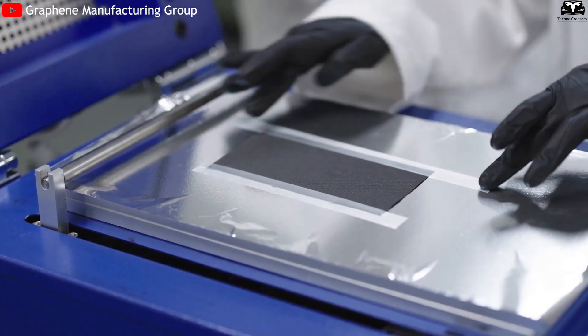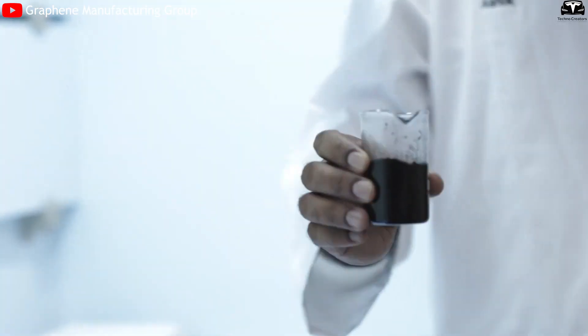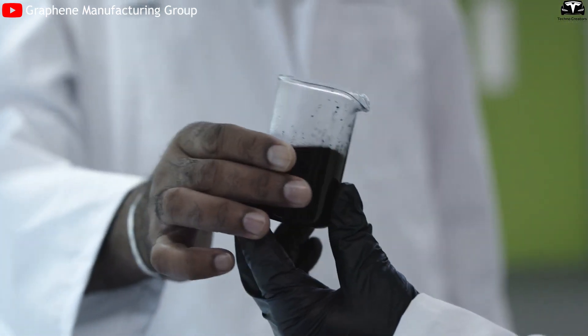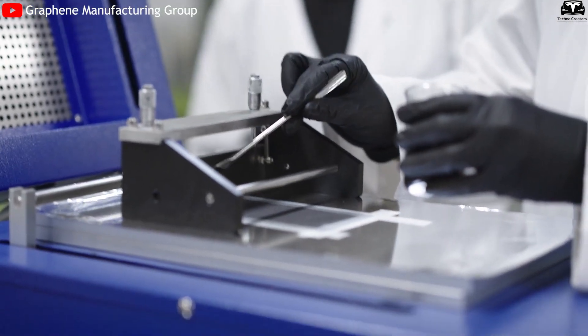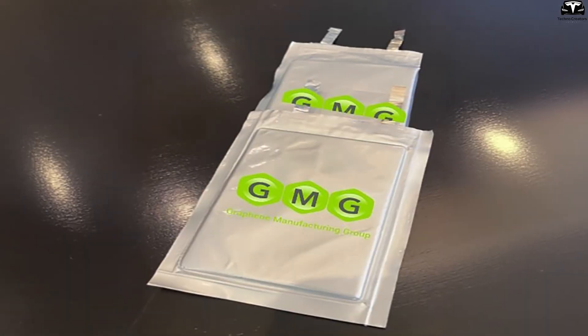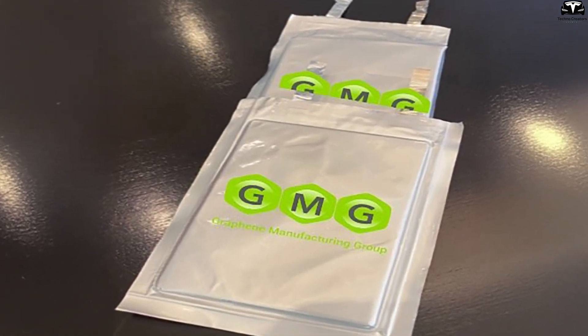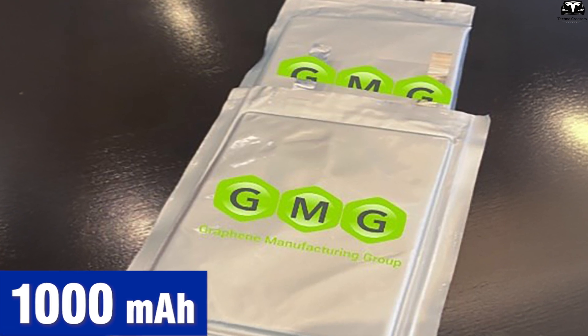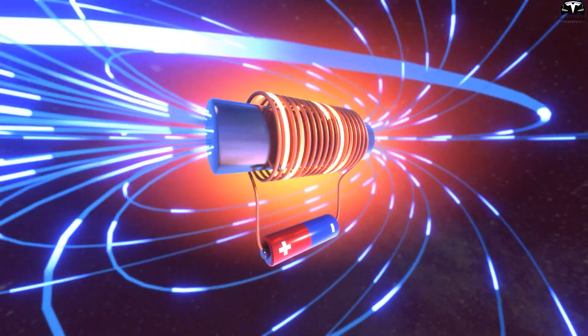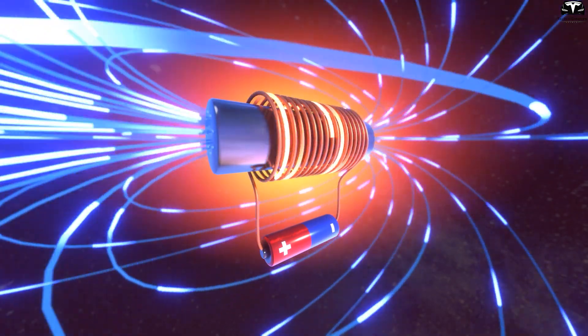The battery cells themselves are typically assembled in a pouch cell format, which is flexible, lightweight, and easier to produce compared to rigid cylindrical or prismatic cells. GMG's current research focuses on producing pouch cells with capacities exceeding 1,000 milliamp hours, aiming to balance energy density with rapid charge-discharge capabilities.